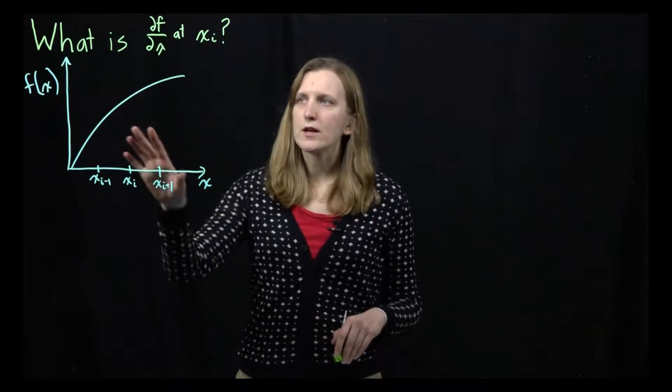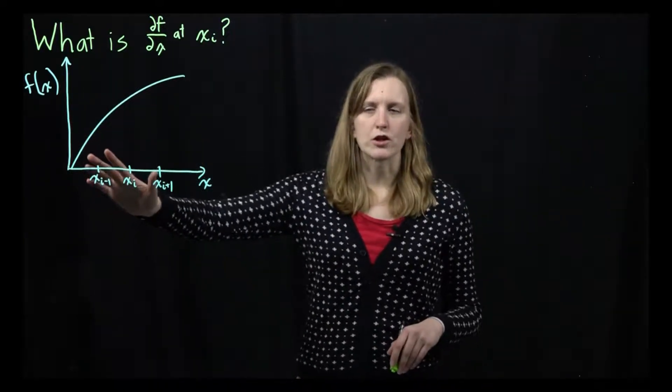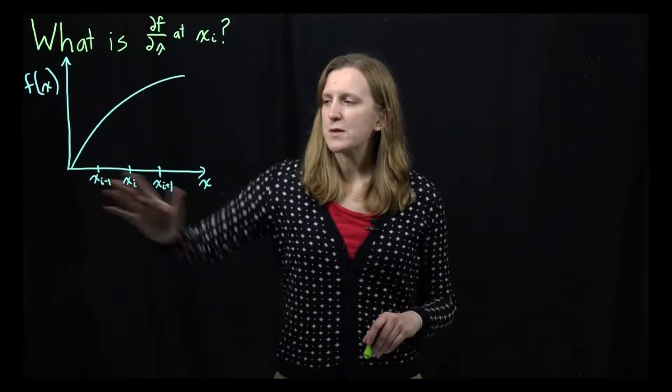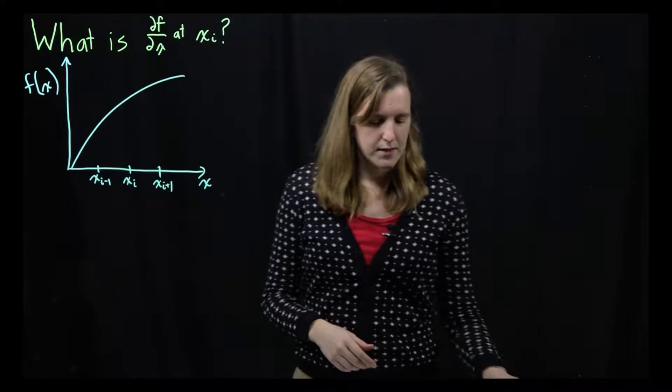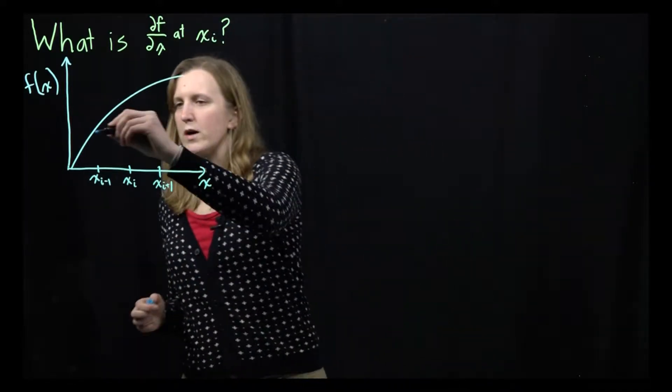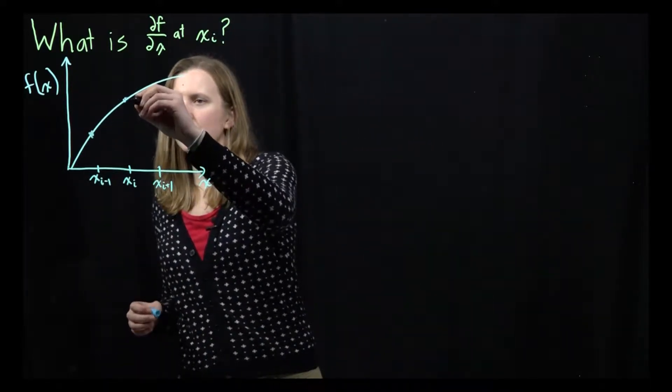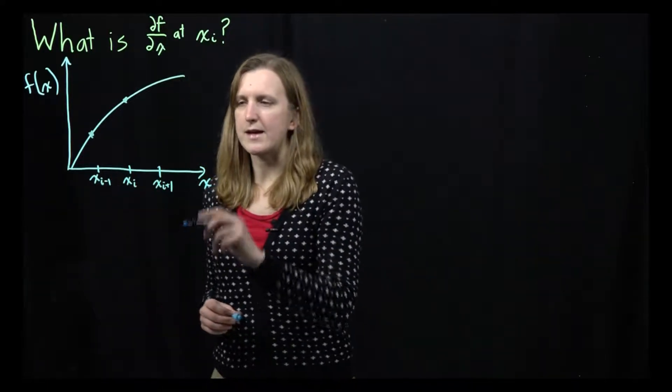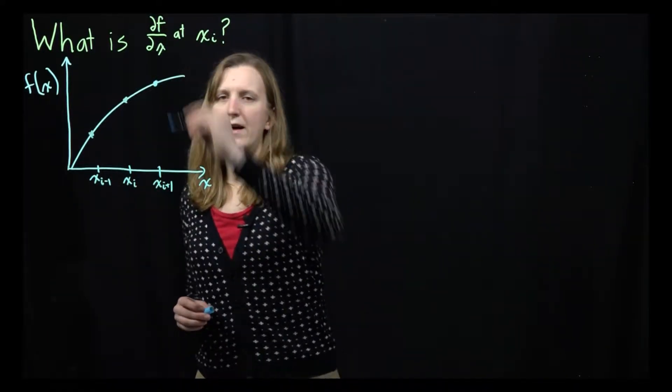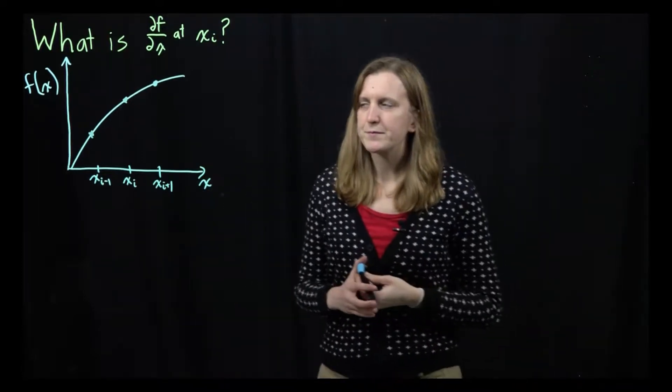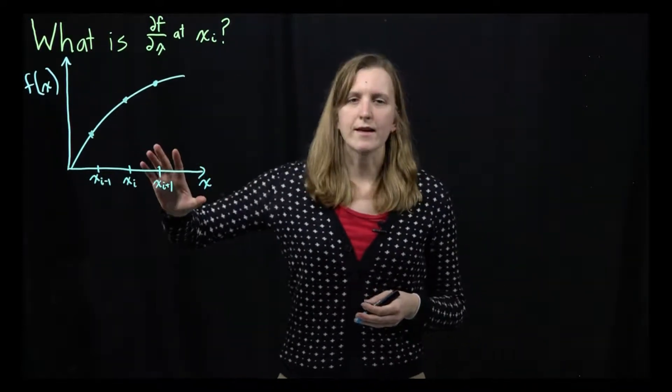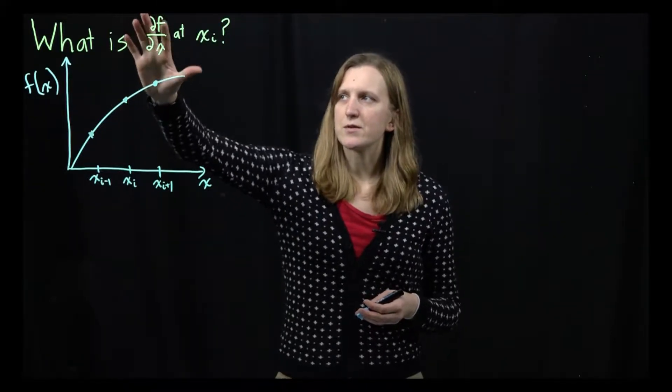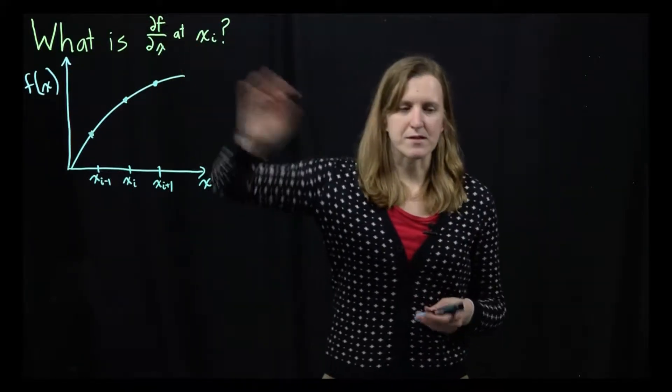And so what we're going to look at is we have this general curve f of x. We know it at three specific points. We know its value at xi minus 1, we know its value at xi, and we know its value at xi plus 1. And so what we are going to be solving today is we want to know what is this derivative, so df/dx, at this specific point.